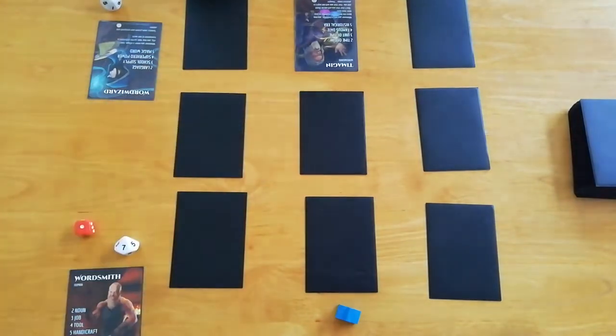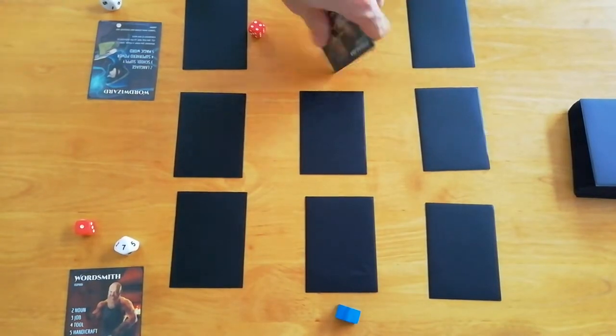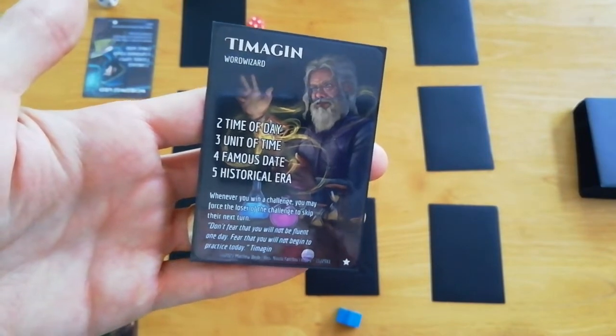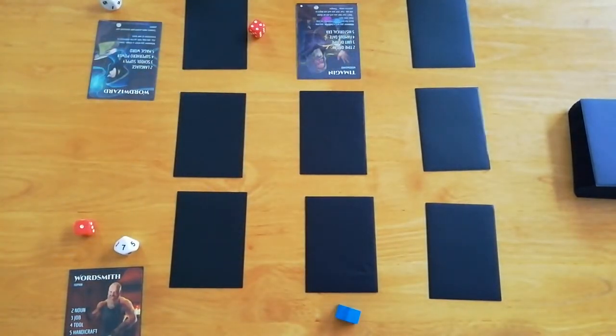So we look here. We rolled the dice and look there. For, let me show the camera closer, for is a famous date. That's a good one for you Hugo. Do you know a famous date in history?